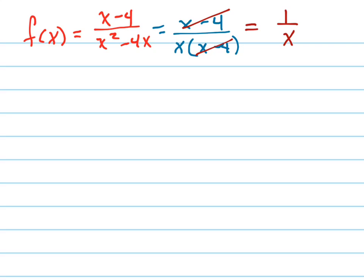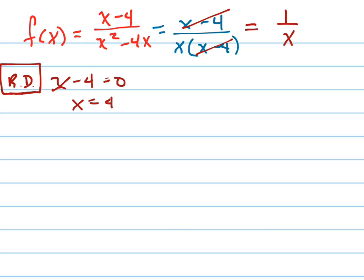Step 2 is to set the cancelled factor, x minus 4, equal to zero — this is my removable discontinuity. Setting x minus 4 equal to zero and solving gives x equals 4. So at x equals 4, I need to find f of 4 by plugging into the simplified function.